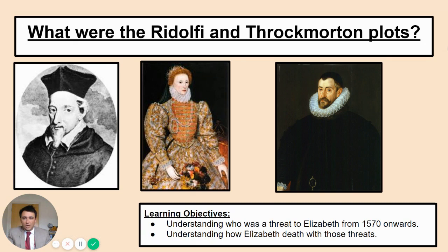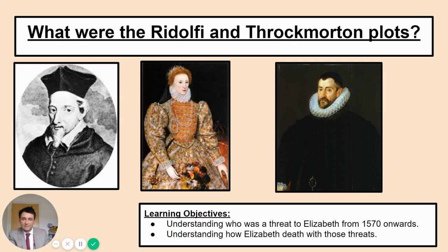Hi guys. So last lesson we looked at the revolt of the Northern Earls — a huge threat to Elizabeth just 10 years into her reign, and how rich powerful families from the north of England tried to replace her. Today's lesson will look at another threat Elizabeth faced: the Rodolfi and Frockmorton plots. Our learning objectives are to understand who was a threat to Elizabeth from 1570 onwards, both in England and abroad, and how Elizabeth dealt with these threats.